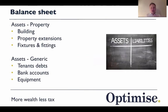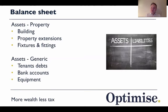Your balance sheet represents the assets of the company: your buildings, project extensions, fixtures and fittings. It also shows tenant debts — money owed to you — which is genuinely an asset to the company, though you need to keep track of it. Your bank accounts and equipment are shown there as well.